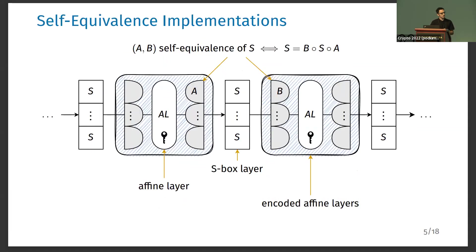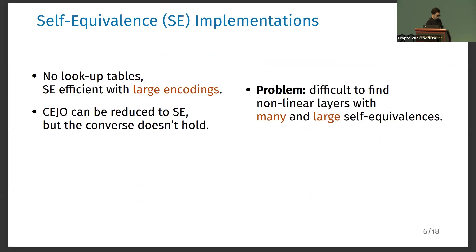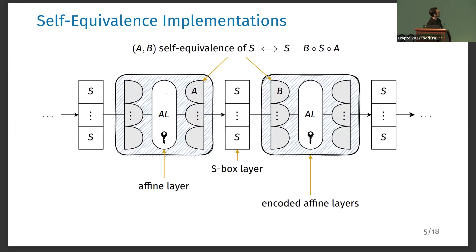The only other method proposed in academia is the self-equivalence framework, based on the idea of CCZ-equivalence. A self-equivalence of a function S is a pair of permutations A and B such that when composed to this function S, the same function is obtained. A self-equivalence implementation also uses the idea of encoded round functions, but here the round encodings are self-equivalences of the S-box layers. The round encodings are not merged with the whole round function, but only with the affine layer containing the round key material, creating the encoded affine layers.